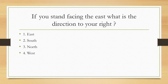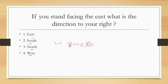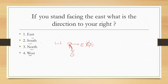Next question: if you stand facing the east, what is the direction to your right? The options are east, south, north, and west. Let's see — if you are standing and facing towards the east, then the back of you is west. He is asking what is the direction to your right. To your right is south. South is the answer, the second option.